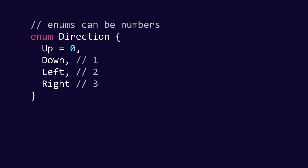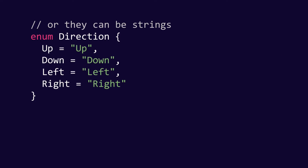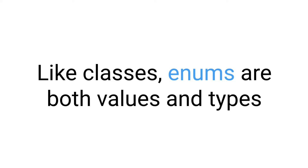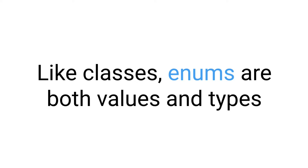Enums can be numbers like this, but they can also be strings like this. Like classes, enums are both values and types. This is one of the two things that can be both in TypeScript — we have on one hand classes, and now we have enums.